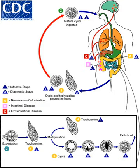Free-living amoebas are often described as opportunistic free-living amoebas, as human infection is not an obligate part of their life cycle. These include: Naegleria fowleri, which causes primary amoebic meningoencephalitis; Acanthamoeba, which causes cutaneous amoebiasis and acanthamoeba keratitis; Balamuthia mandrillaris, which causes granulomatous amoebic encephalitis and primary amoebic meningoencephalitis; and Sappinia diploidea.